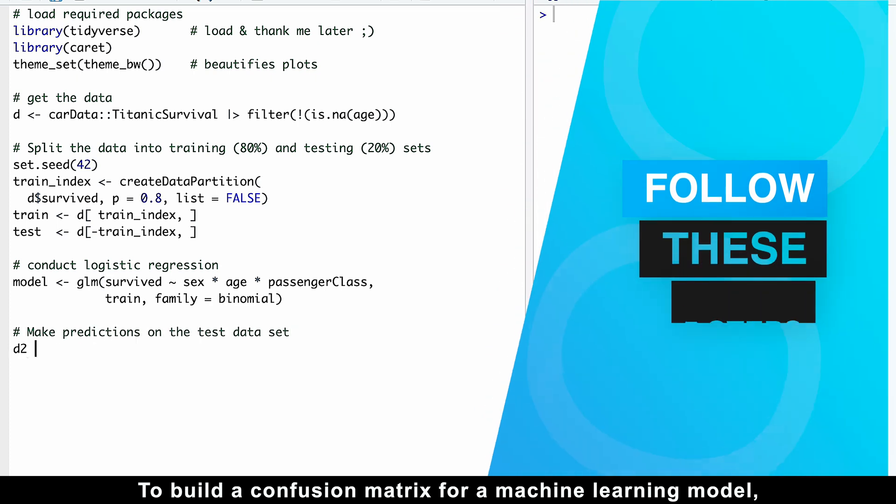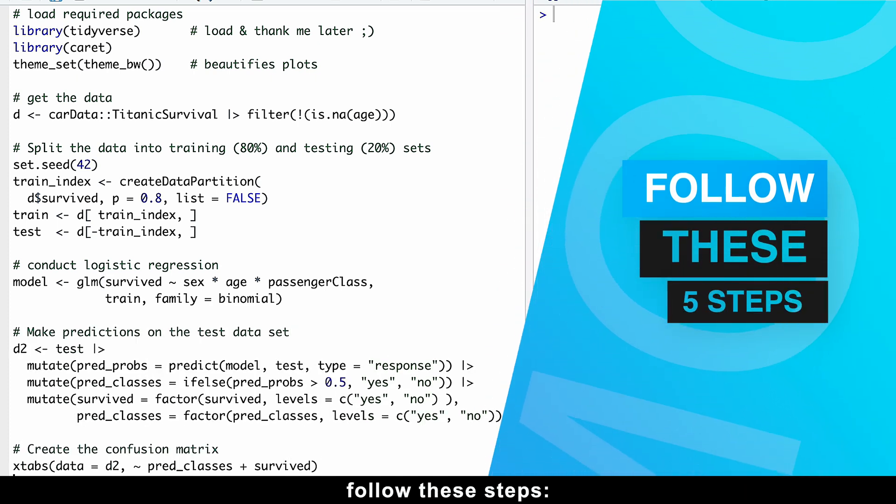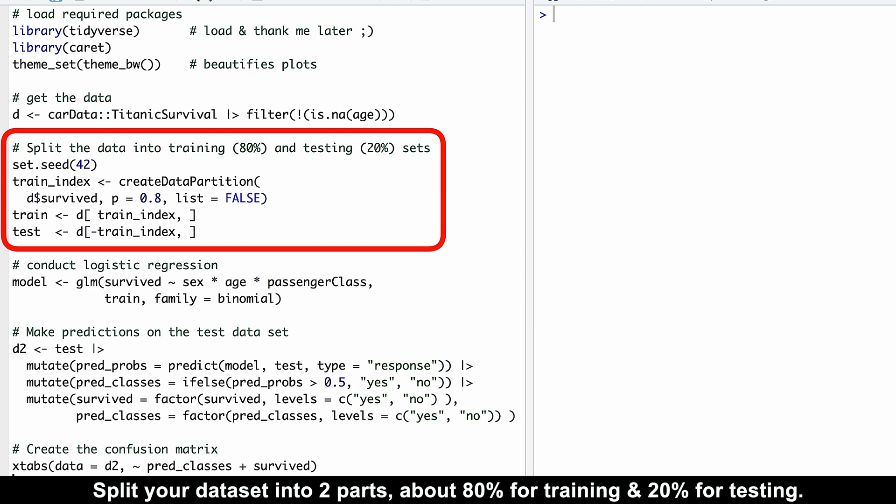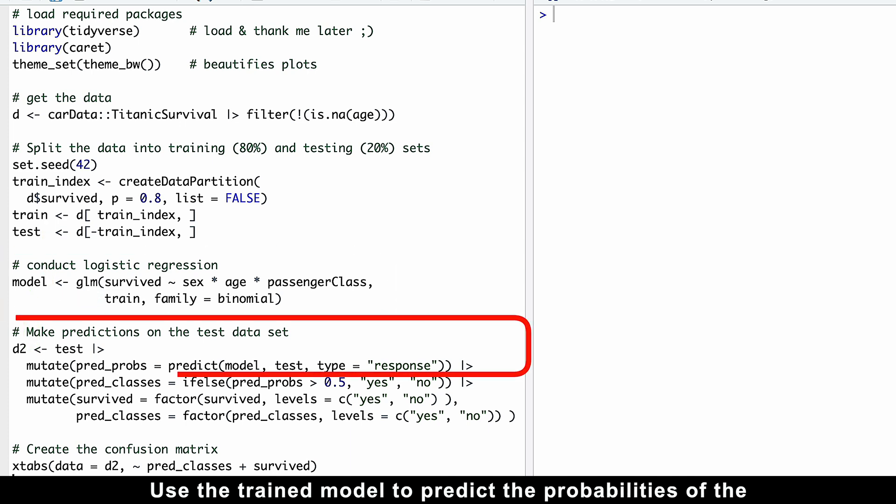To build the confusion matrix for a machine learning model, follow these steps. Split your dataset into two parts, about 80% for training and 20% for testing. Use only the training data to teach the model. Use the trained model to predict the probabilities of the positive outcome for the test data.